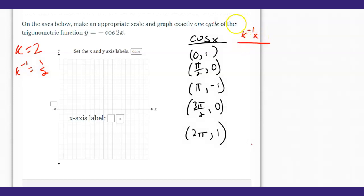One half times all the x values, so that gives me zero one. Pi over two times one half, remember you'll multiply the top with the top and the bottom with the bottom, so pi over four. Then pi over two negative one, and then three pi over four zero, and then pi gives us one.